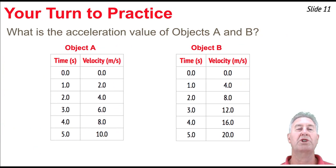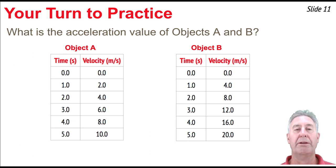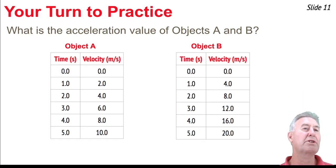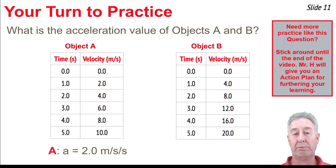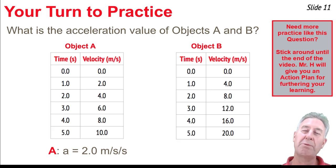Now it's your turn. Here are objects A and B — figure out the acceleration of each. For object A, time changes by 1 second every row, and velocity changes by 2 meters per second. That's an acceleration of 2 meters per second squared. For object B, time again changes by 1 second, and velocity changes by 4 meters per second. That's an acceleration of 4 meters per second squared.